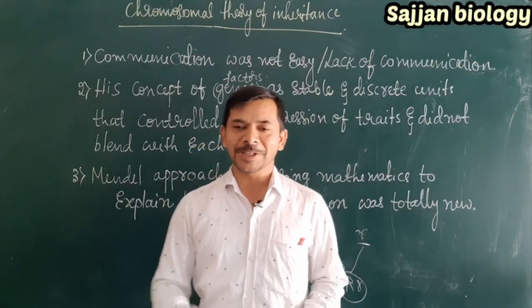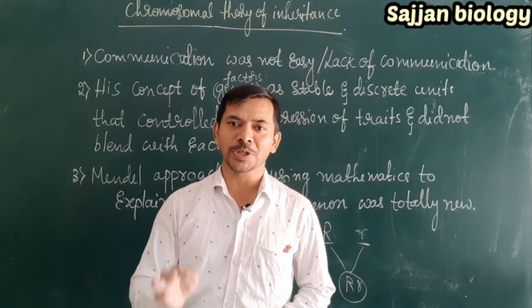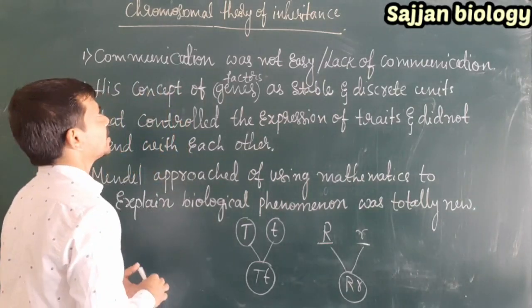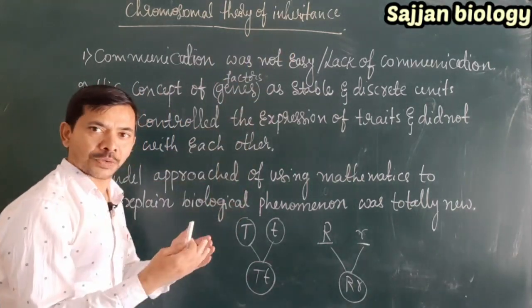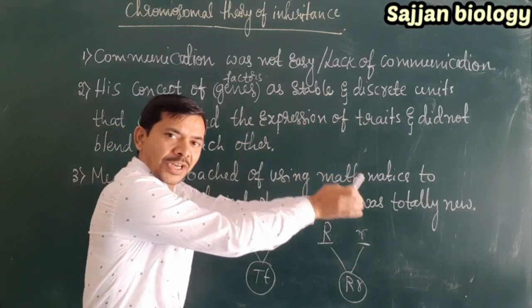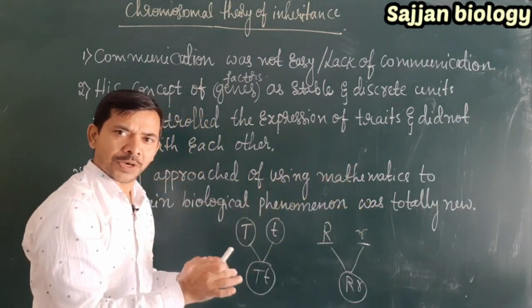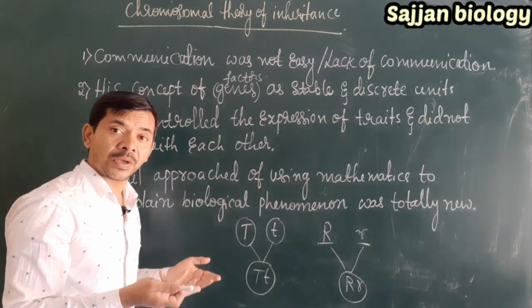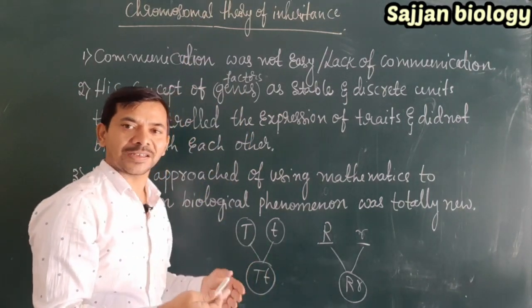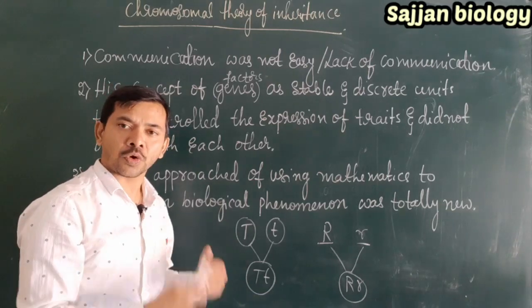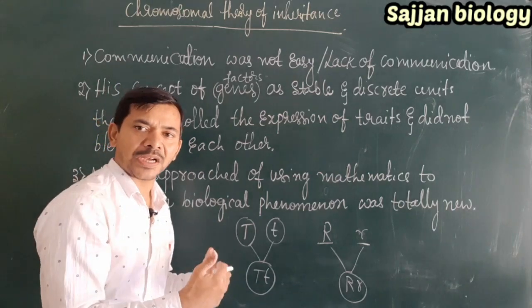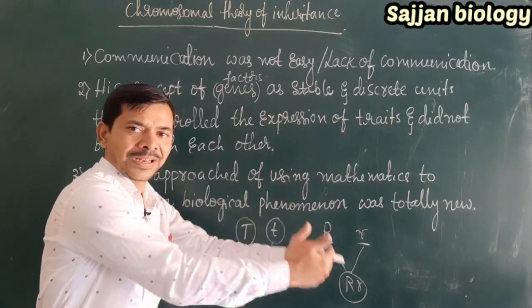Hello dear students, welcome back to Sachin Biology classes. We are studying today about the chromosomal theory of inheritance. Inheritance is the transformation of characters from one generation to the next generation, from parents to offspring. Inheritance takes place by chromosomes, and we are studying how chromosomes perform to transfer characters from a parent to offspring or from one generation to the next generation.